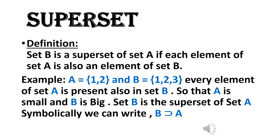Superset: Set B is a superset of set A if each element of set A is also an element of set B. For example, A = {1, 2} and B = {1, 2, 3} — every element of A is present in B, so A is small and B is big. Therefore, set B is the superset of set A, written symbolically as B ⊇ A.